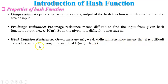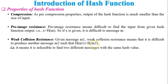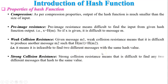Third property: weak collision resistance. Given message M1, weak collision resistance means it is difficult to produce another message M2 such that H(M1) equals H(M2). So for two different messages M1 and M2, the same hash value cannot feasibly be generated — it is infeasible to find two different messages with the same hash value.